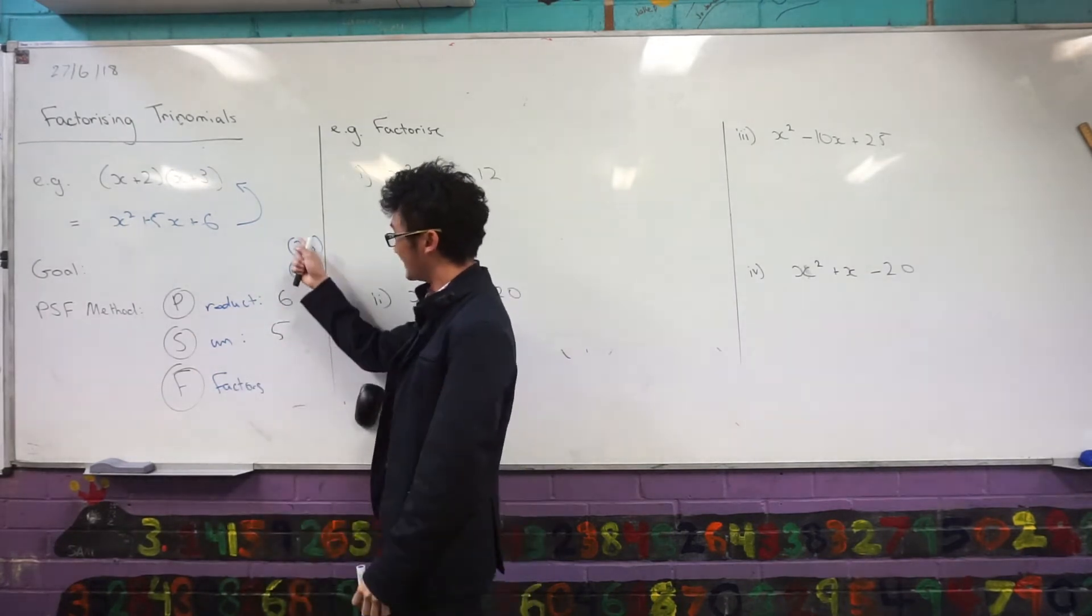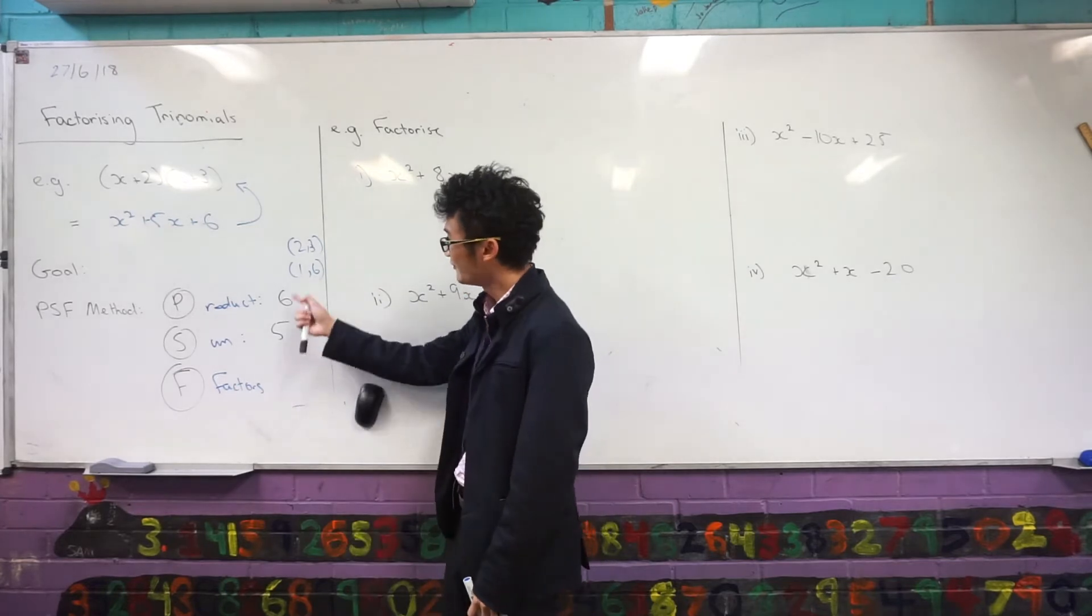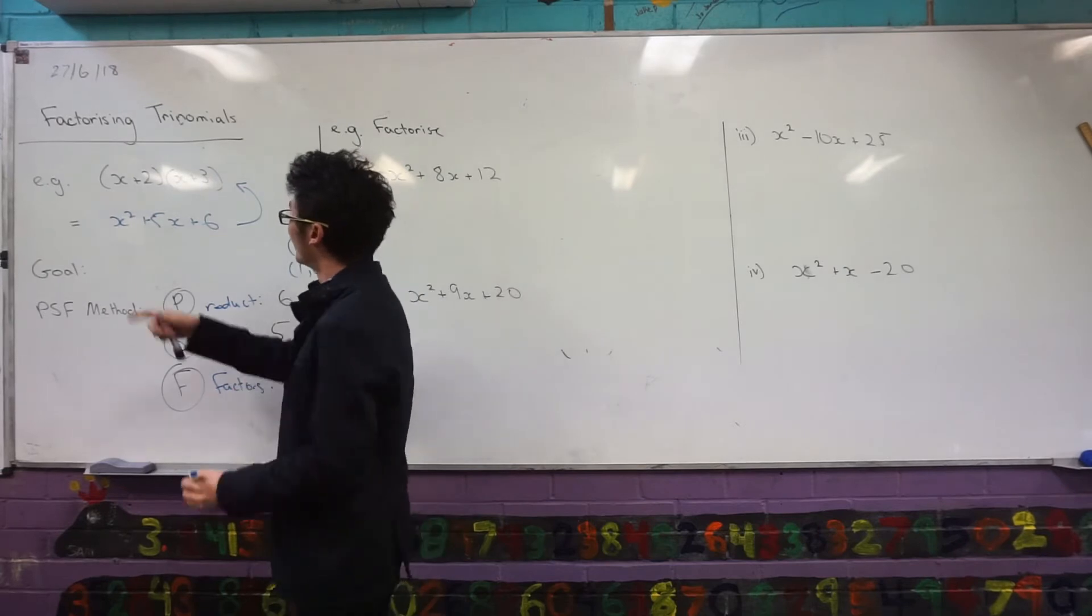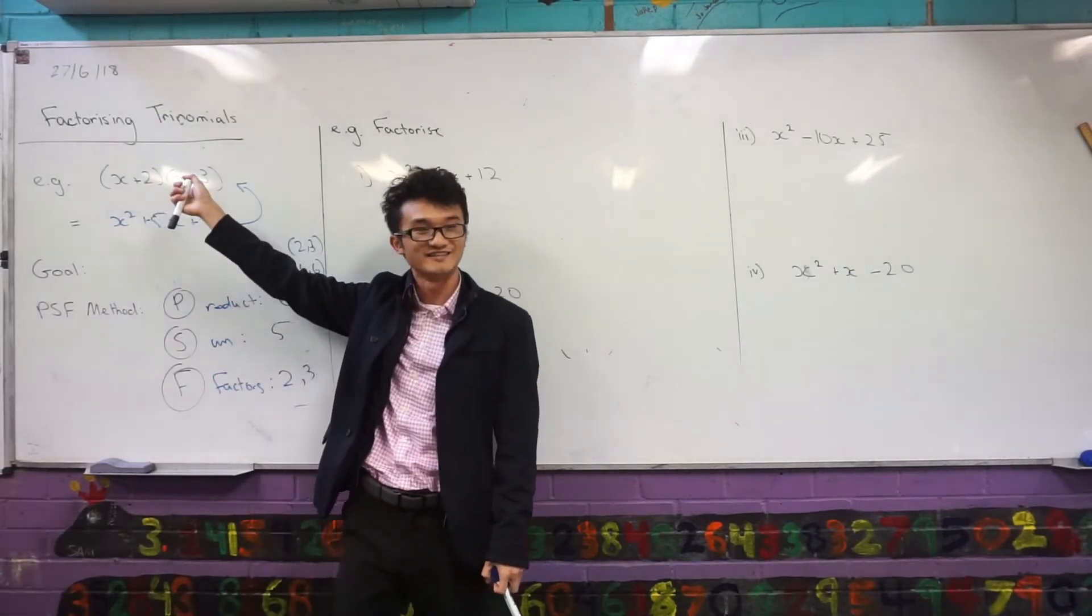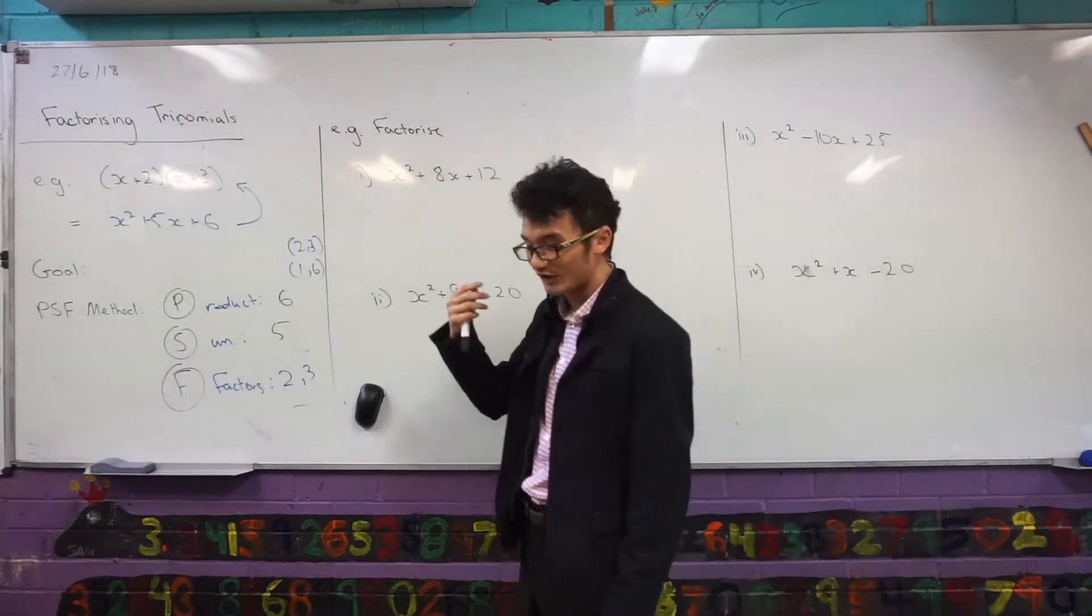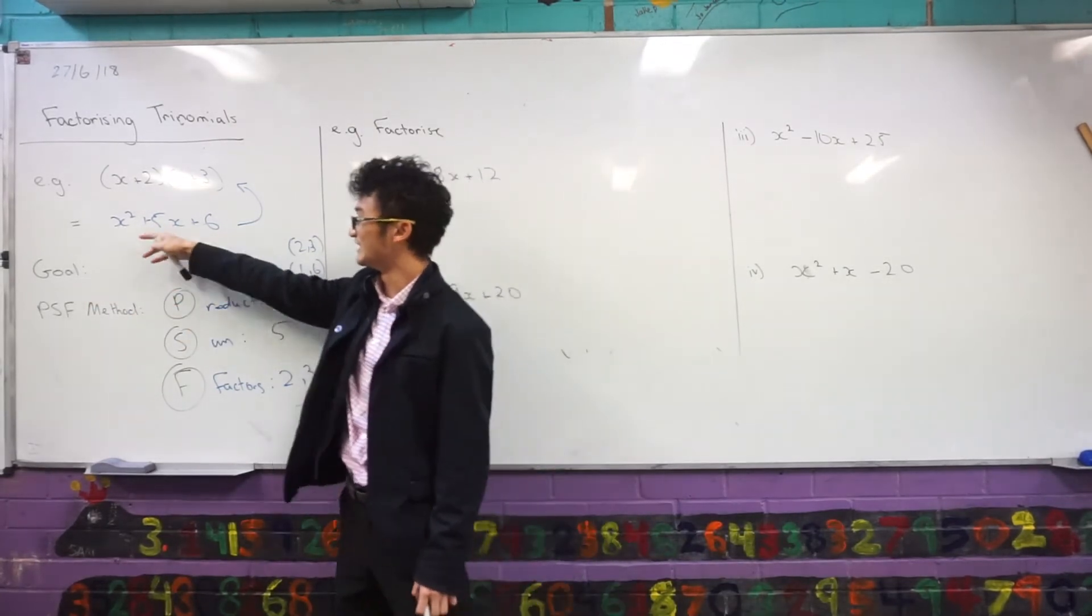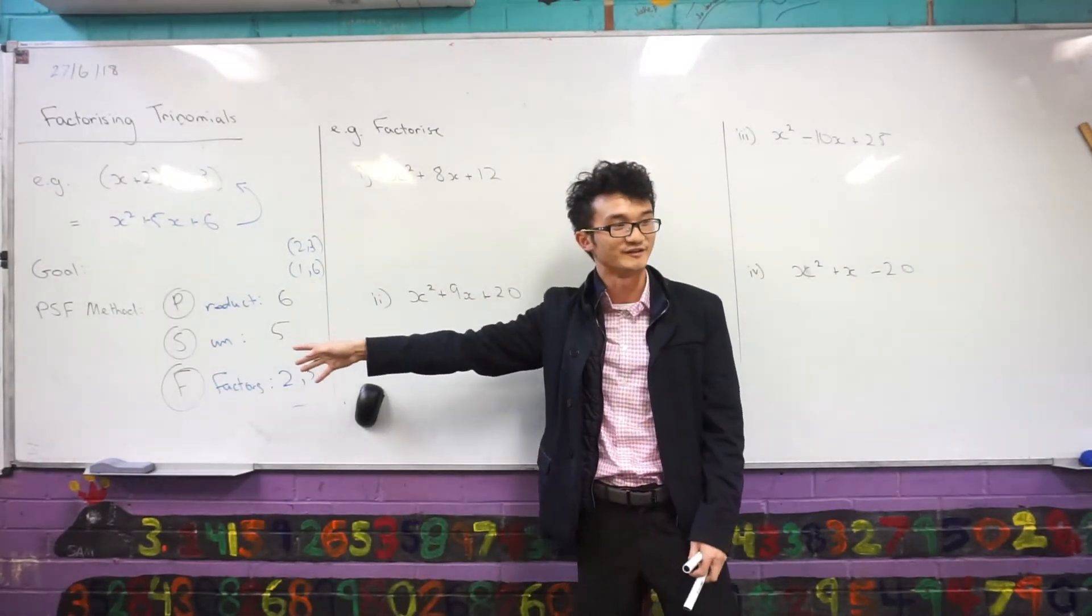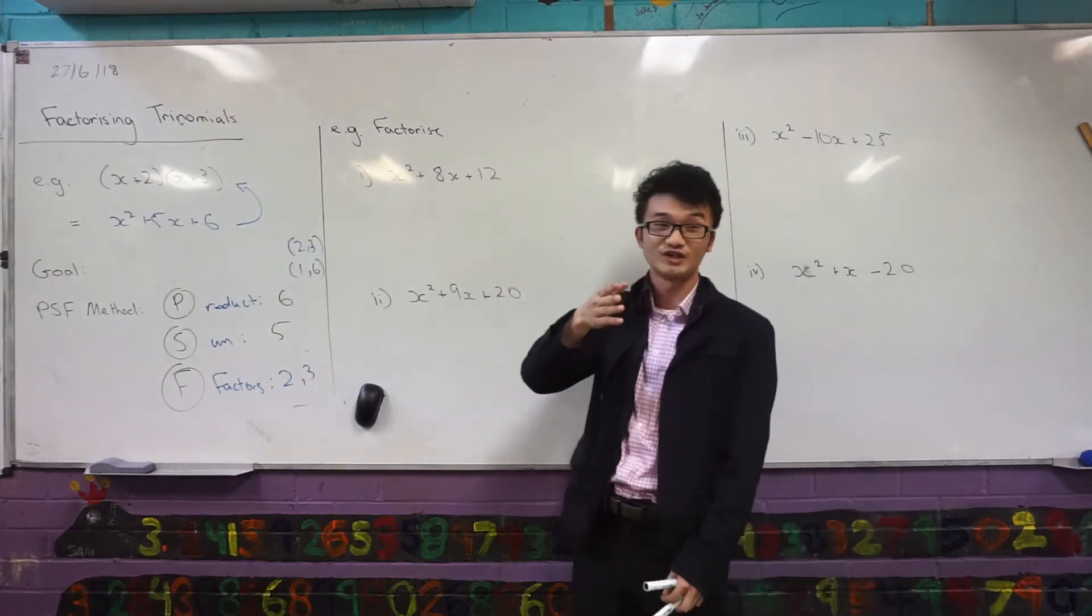And then we can check, okay, these are all the factors of six. Which ones add to five? Only two and three are going to work. So those are my two factors, two and three. And then all I have to do is put them back into those brackets there. Can you see that? This is the framework I'm going to use any time I'm trying to factorize a trinomial. Any time I see an expression with these three terms here, and I want to put them back into brackets, I'm always going to think about this PSF method. Let me just show you a couple more examples, and then I'll let you try some yourselves.